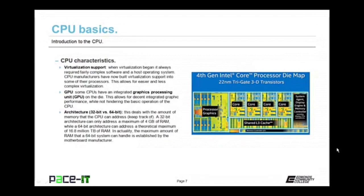Some CPUs have virtualization support. When virtualization began, it required fairly complex software and a host operating system. CPU manufacturers have now built virtualization support into some of their processors, allowing for easier and less complex virtualization. Some more modern CPUs come with a GPU — a graphics processing unit — on the die. This allows for decent integrated graphics performance while not hindering the basic operation of the CPU, so you don't have to buy a graphics card and your CPU performance is not hindered by graphics rendering.